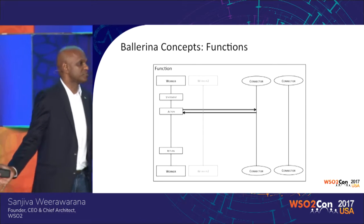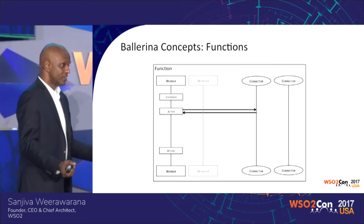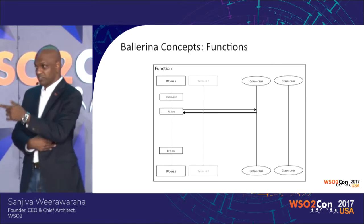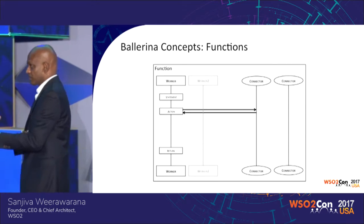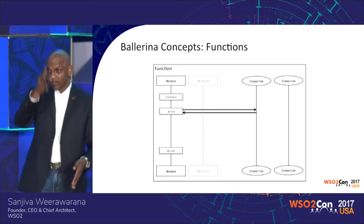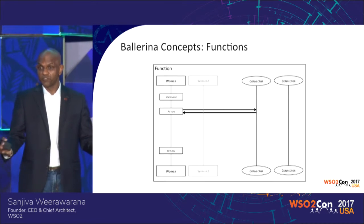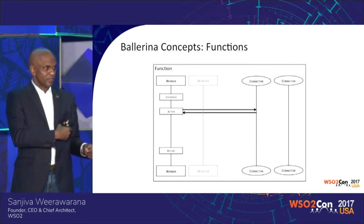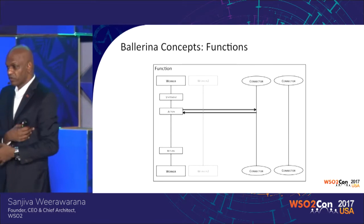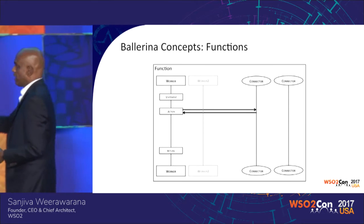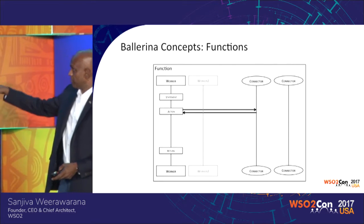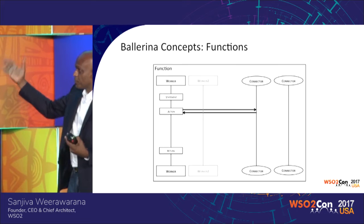A function is just a function — you just saw main. Main is a function. Main is a special function because if we call it main and its signature takes an array of strings, it's meant to be called from the shell. A function has a worker. A worker is a parallel thread of execution — you can have any number of threads of execution. In sequence diagram terms, you have lines of execution — these are the actors — and you program them by putting code into them. There's a graphical editor called Composer that we'll show you. Each statement runs sequentially; this is a normal imperative program.